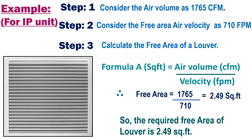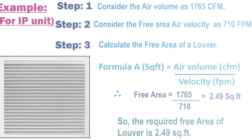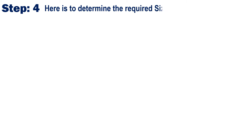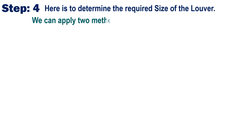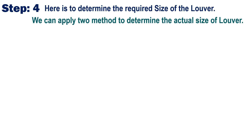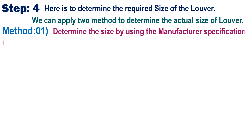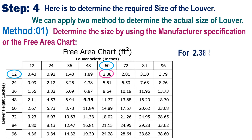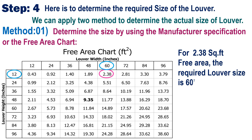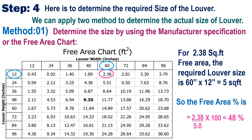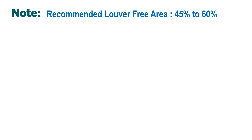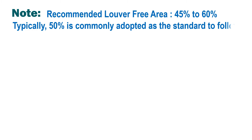So the required free area of the louver is 2.49 square feet. Now, here is how to determine the required size of the louver. We can apply two methods. Step 4, first method: determine the size of the louver using the manufacturer specification or the free area chart. For 2.38 square feet of free area, the required louver size is 60 inches × 12 inches = 5 square feet, so the free area percent is 48%. Note: the recommended louver free area is about 45% to 60%; typically 50% is commonly adopted as the standard rule of thumb.